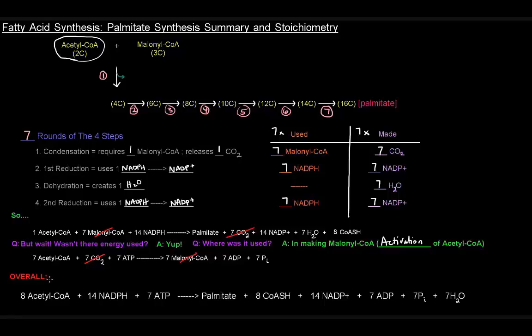The overall stoichiometry is one plus seven acetyl-CoA's, so eight acetyl-CoA's, plus 14 NADPHs and seven ATPs used to create one palmitate, eight coenzyme A's, 14 NADP+, seven waters, seven ADPs, and seven inorganic phosphates.